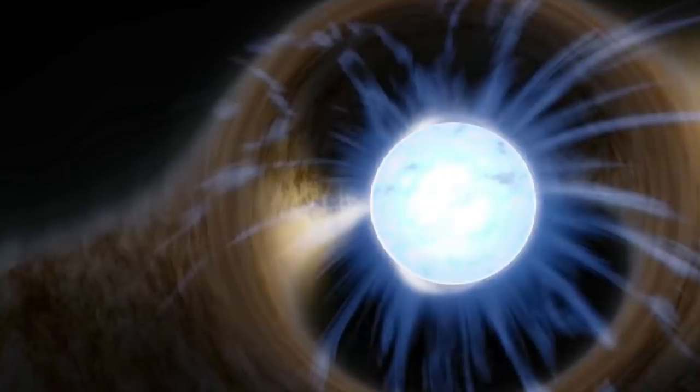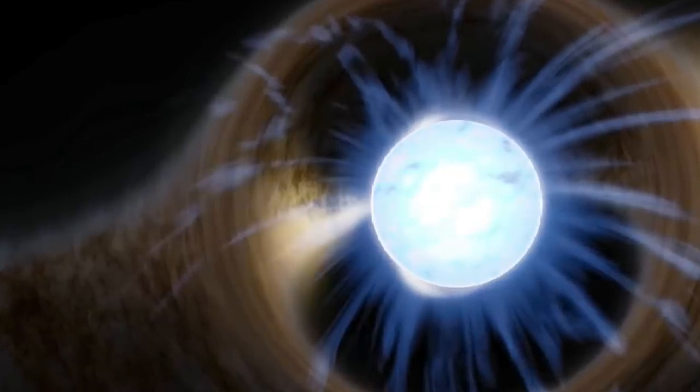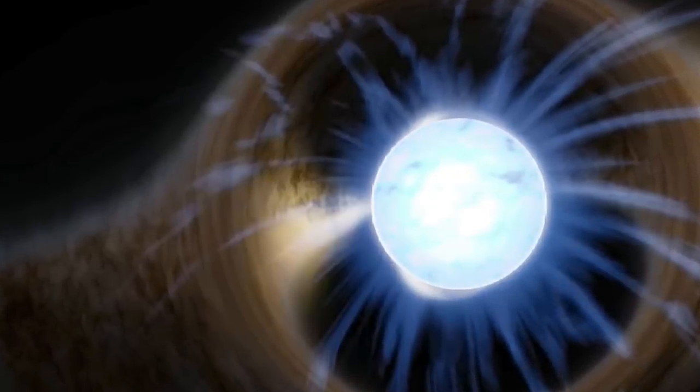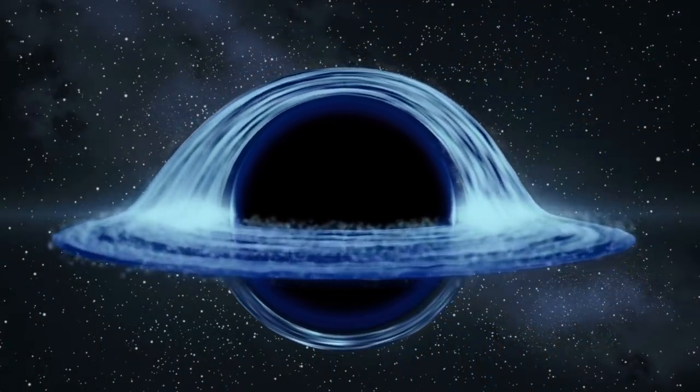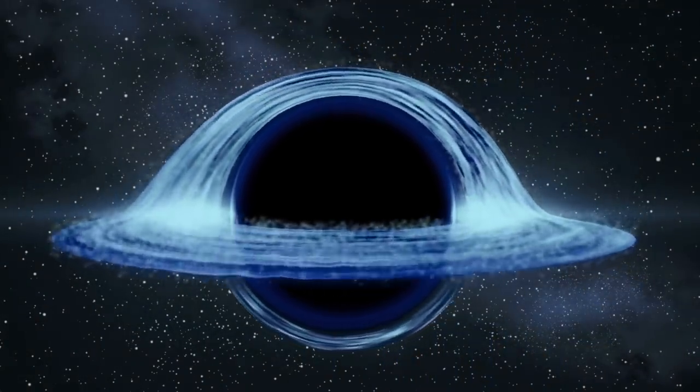This could provide some insight to neutron stars which is made up of the densest matter in the cosmos. This observation was made by LIGO and VIRGO, near Pisa in Italy which holds around 400 scientists.